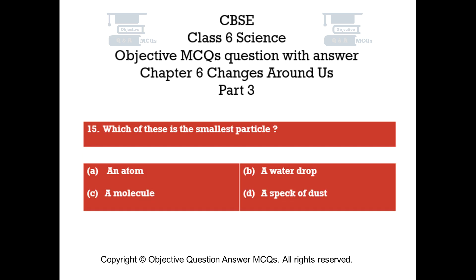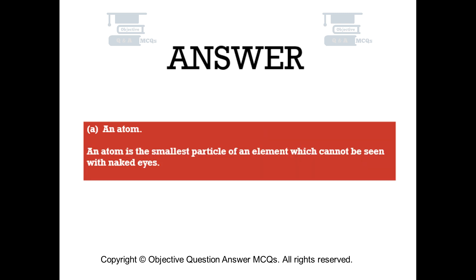Question number 15. Which of these is the smallest particle? Option A, an atom. Option B, a water drop. Option C, a molecule. Option D, a speck of dust. The right answer is option A — an atom is the smallest particle of an element, which cannot be seen with the naked eye.